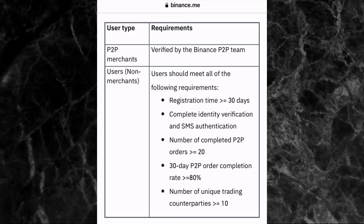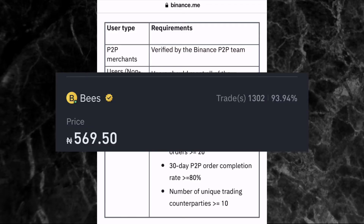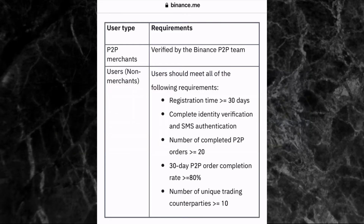Before you can post an ad on Binance P2P, there are some requirements you need to meet. You can see on screen the P2P merchant option — those are the ones verified by the Binance P2P team. When you go to the Binance P2P page you will see some traders with a yellow verification mark beside their username; those are the P2P merchants verified by the Binance P2P team.